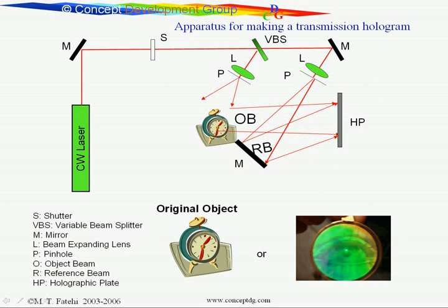This is the way we make a laser hologram, what we call a transmission hologram. The light from the CW laser—continuous wave laser—goes through a series of mirrors and a shutter to fix exposure, to a variable beam splitter to determine the ratio of the reference beam to the object beam.